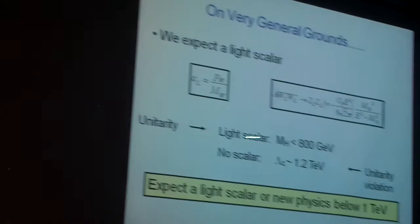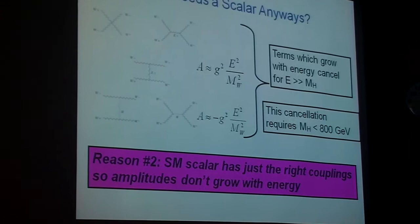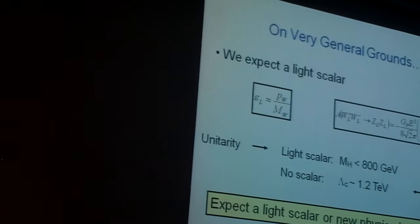Or if I remove the scalar from the theory, if I go back here and just remove these pieces with the scalar, then something happens at around a TeV, and hence my statement that the LHC is the machine we need, because if I don't see my light scalar, well, then something's going to happen around 1.2 TeV.